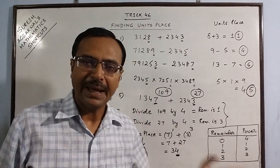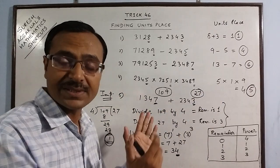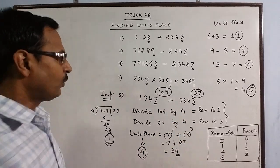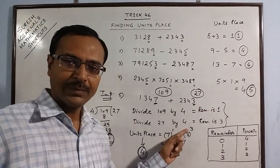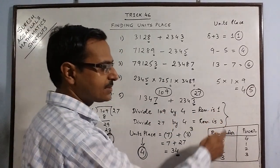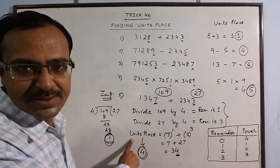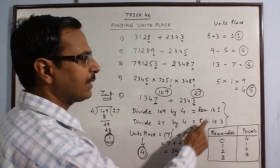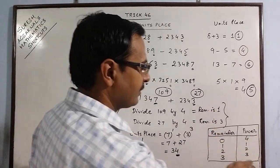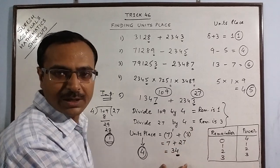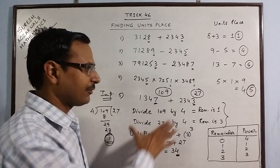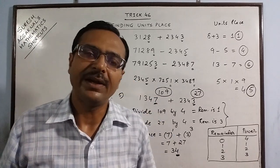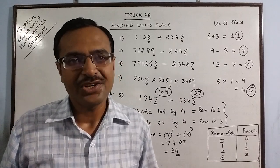Knowing this shortcut enables you to find the unit's place in any sum where the powers are so large that you cannot expand them. To revise: divide the two powers by 4, find the remainders, and use the table to get the corresponding powers. Then take the unit's place of the base numbers, raise them to their corresponding powers, add the results, and take the unit's place of that sum to get the final answer. This is a very crucial method found in most competitive exams. Keep learning, keep enjoying, and share and subscribe if you like it.